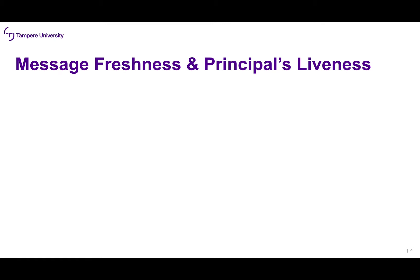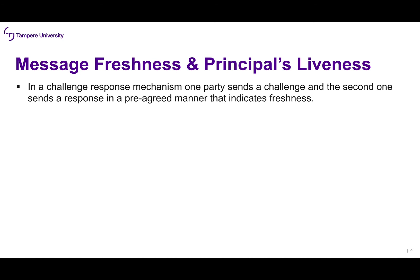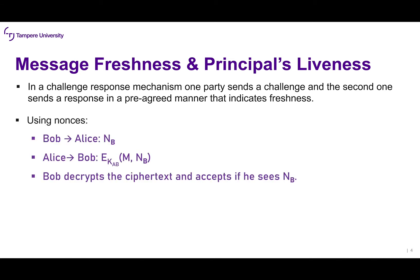Let's talk about message freshness and principal liveness. In a challenge-response mechanism, one party sends a challenge and the second sends a response in a pre-agreed manner that indicates freshness. Alice generates a challenge, sends it to Bob, and Bob needs to reply based on the pre-agreed protocol specification. One way to do this is by using nonces — as discussed in previous videos, a nonce is basically just a random number or random token.